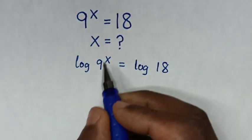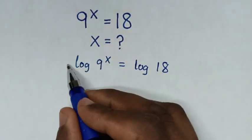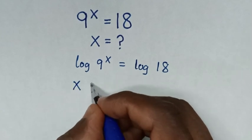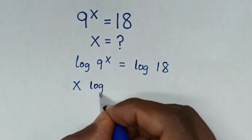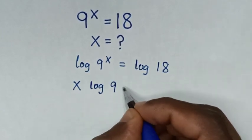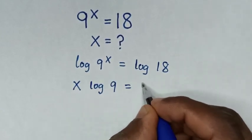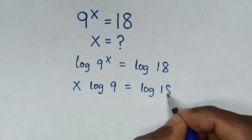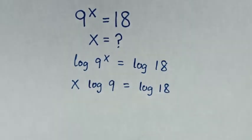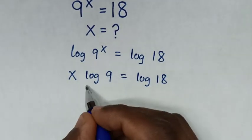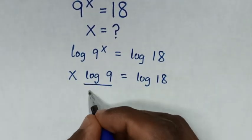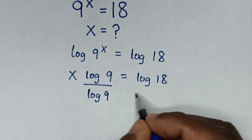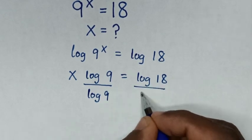Then in the next step, this power of x will move to the front, so it will be x log of 9 is equal to log of 18. Then in the next step, we'll divide by log of 9 on both sides.